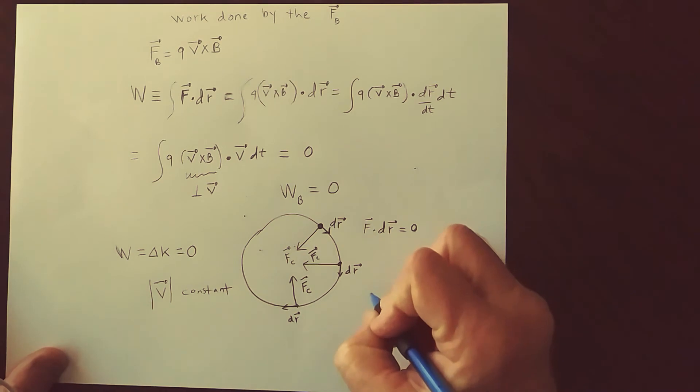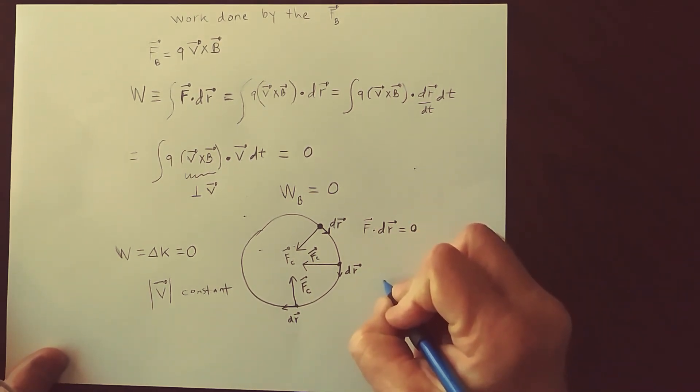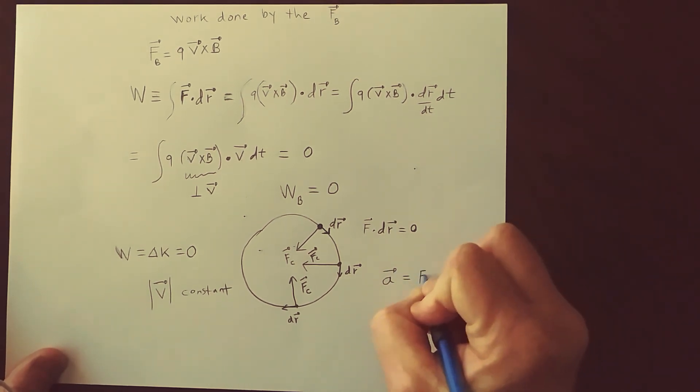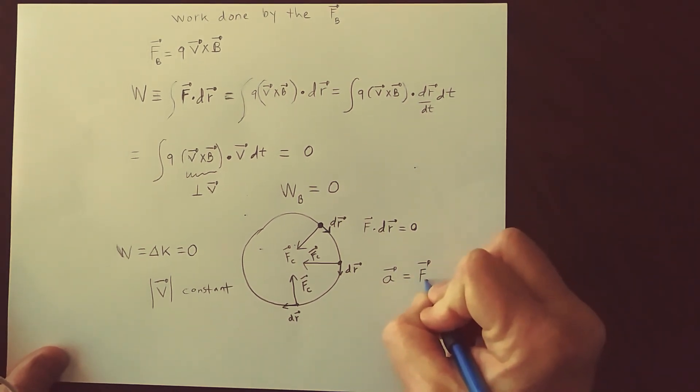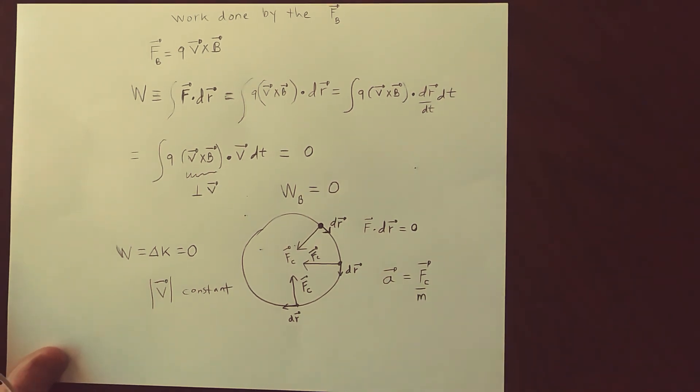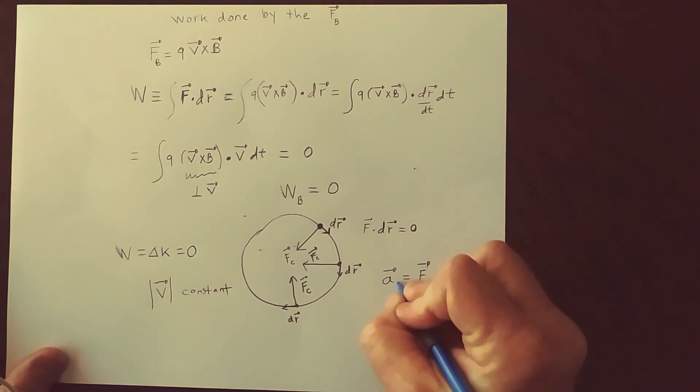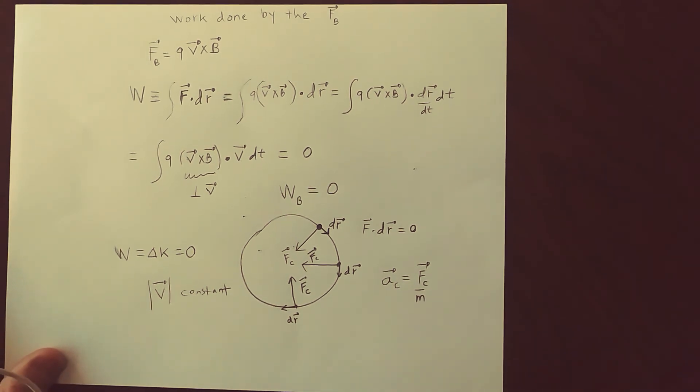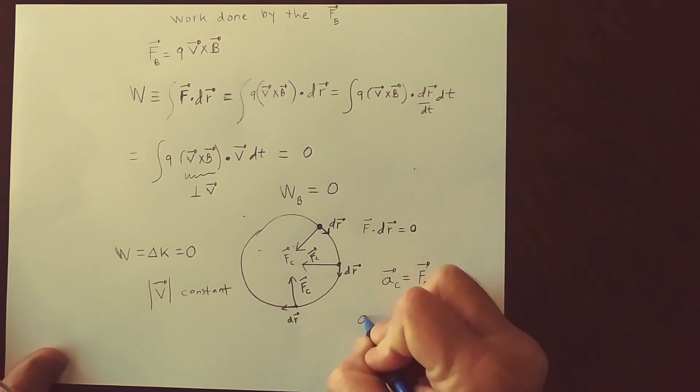And so how is it possible for a force to not be zero, and therefore via F equals MA to give rise to an acceleration that's not zero? All right, so there's a centripetal acceleration via MA equals F, which isn't zero.